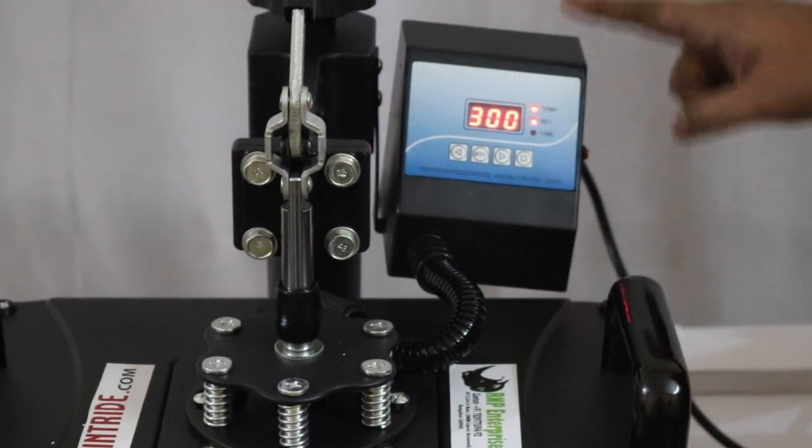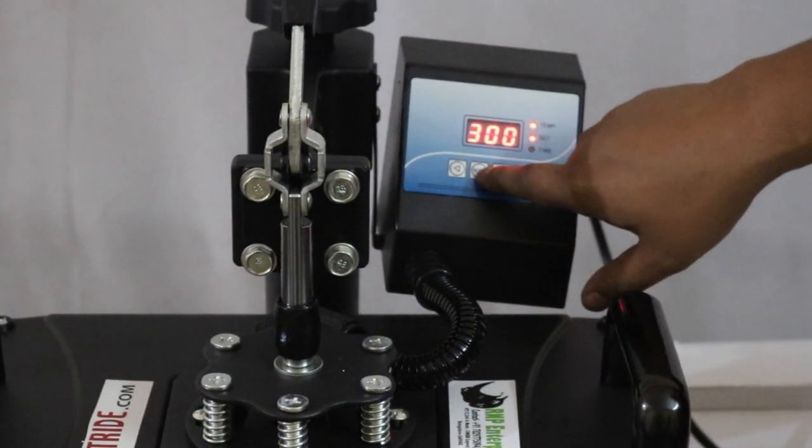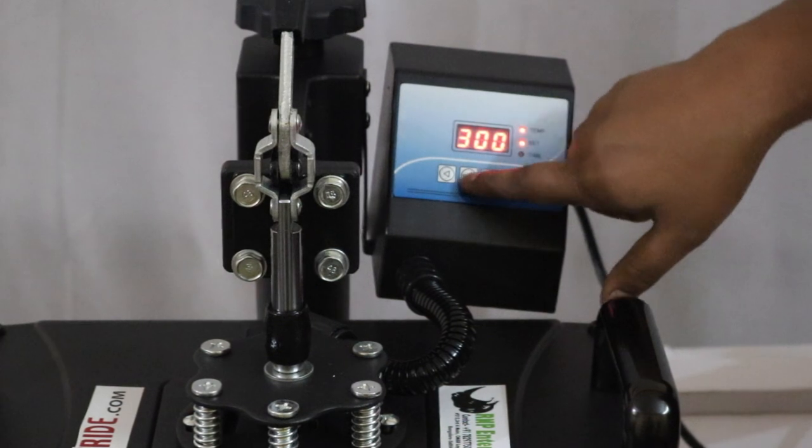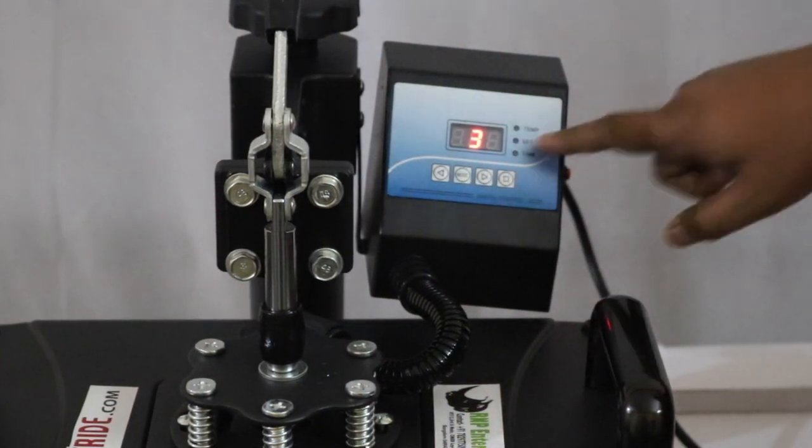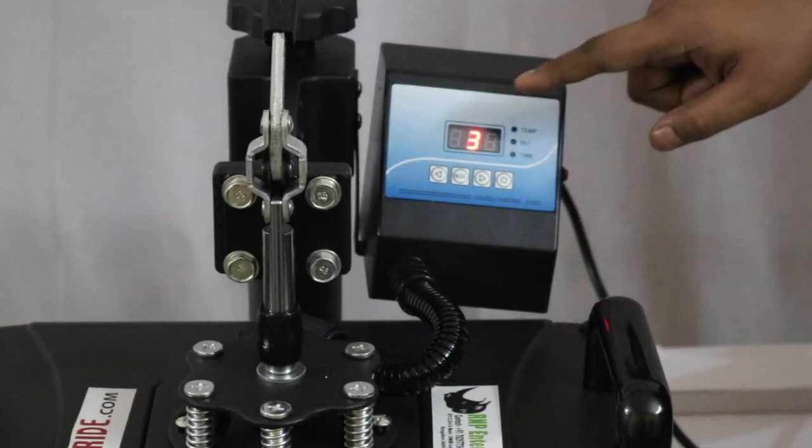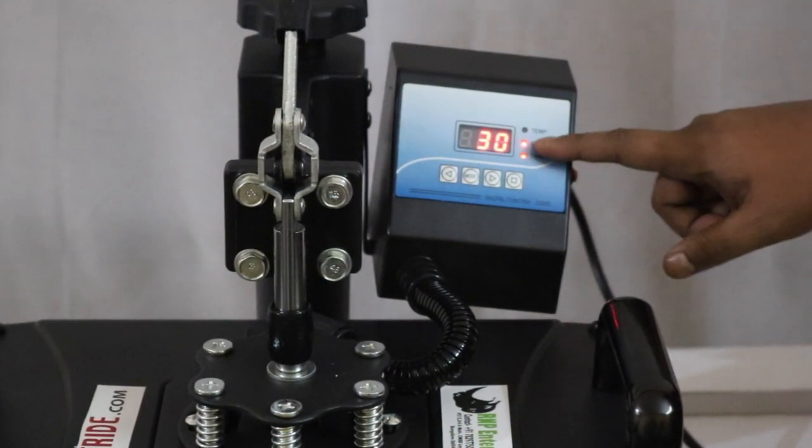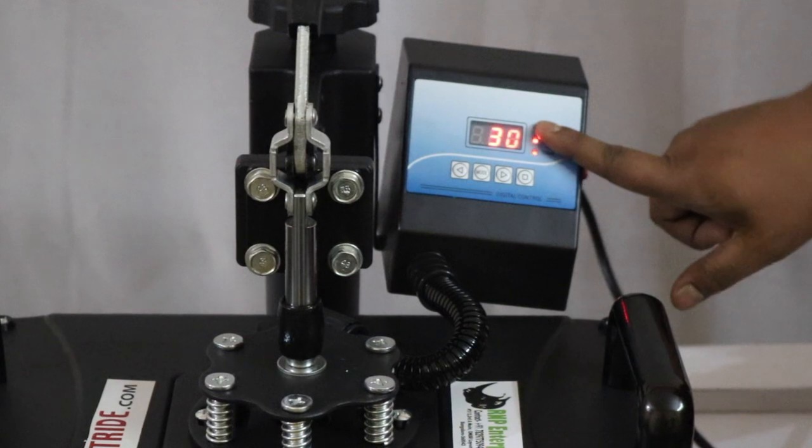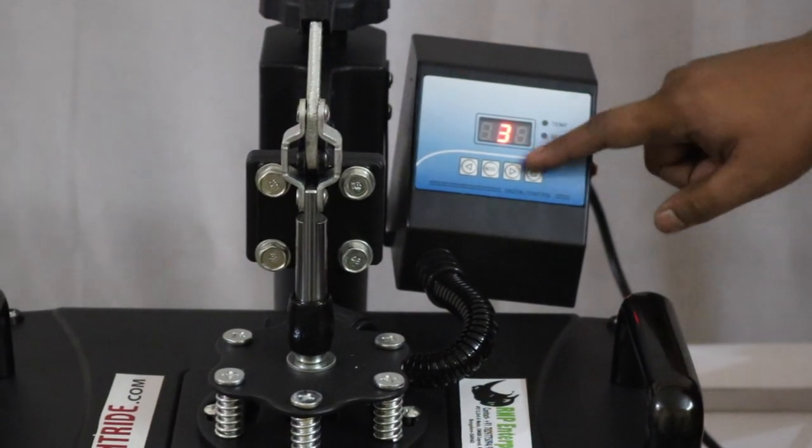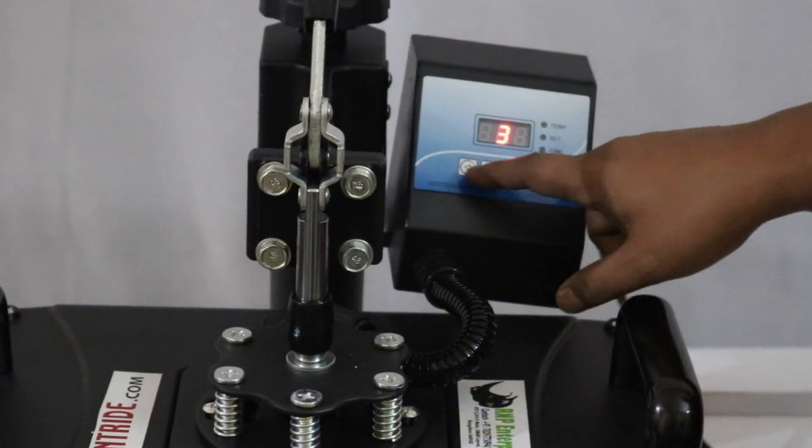Then we'll click the mode button one more time. So this is 30 seconds. For screen printing fusing, 15 seconds. For sublimation you have to keep it for one minute. You can reduce it or increase it.